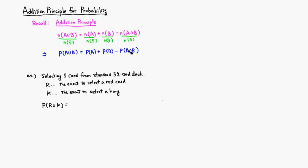Let's look at a quick example. Say you are selecting one card from a standard 52-card deck. Let R be the event of selecting a red card, and K be the event of selecting a king. We want to find the probability of selecting a red card or a king.